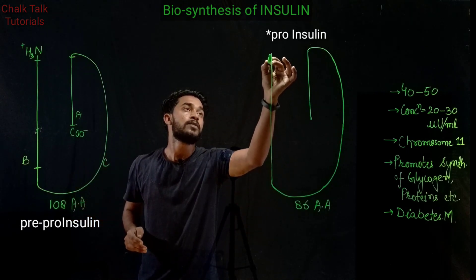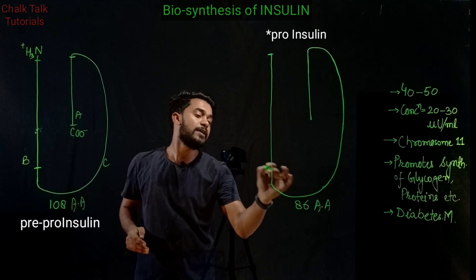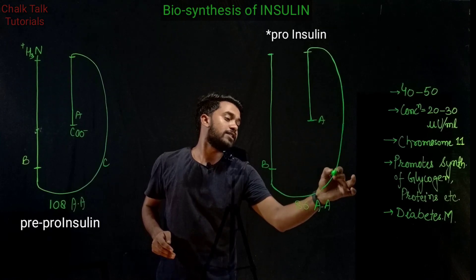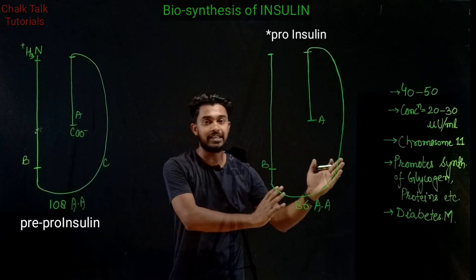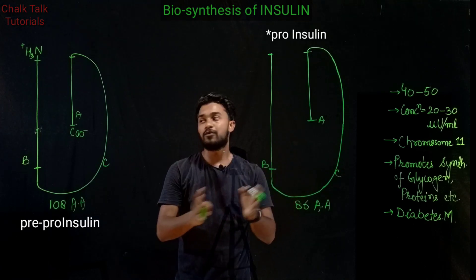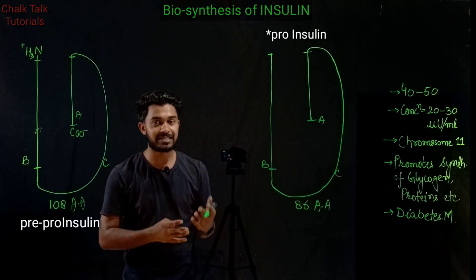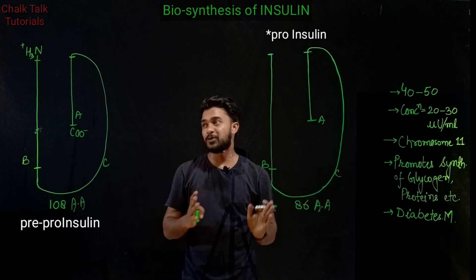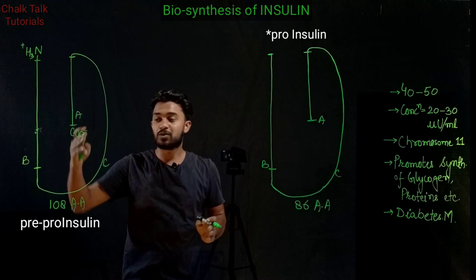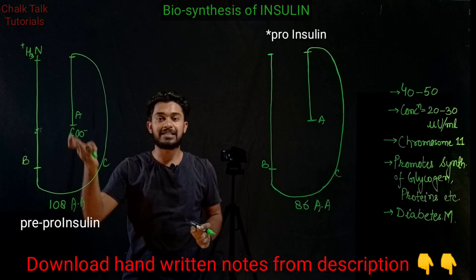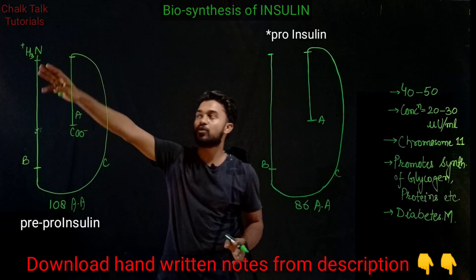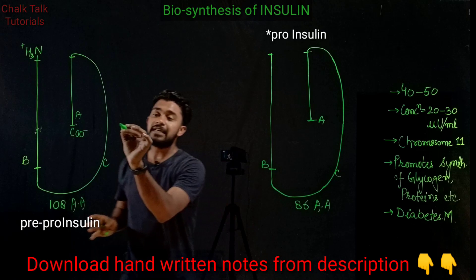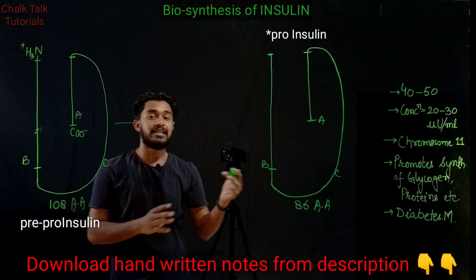Similarly, in pro-insulin we have the B chain, A chain, and C chain. This is the inactive form, and through a process called subsequent degradation it is converted to active insulin. The carboxy acid group is present at one end and the amino group at the other end of the chains.